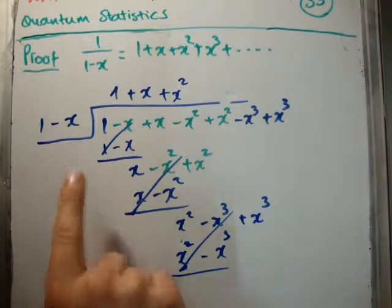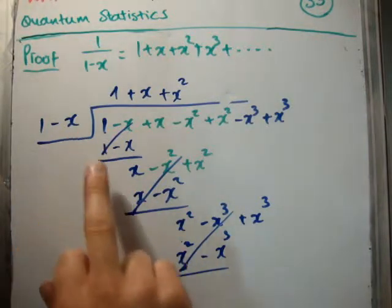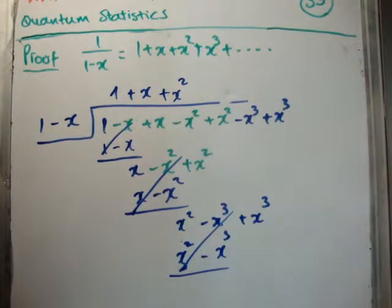So you can see that 1 over 1 minus x actually is the infinite series of 1 plus x, plus x squared, and the whole way up to infinity.